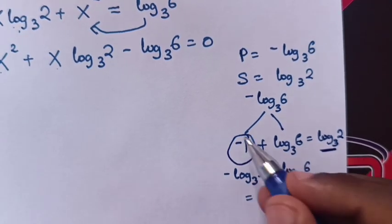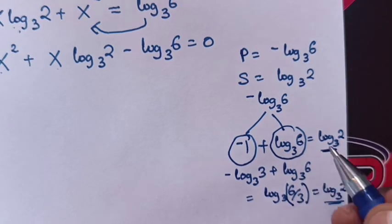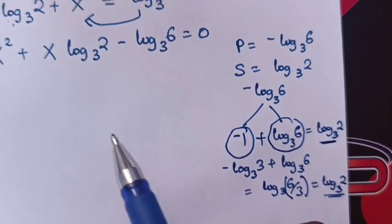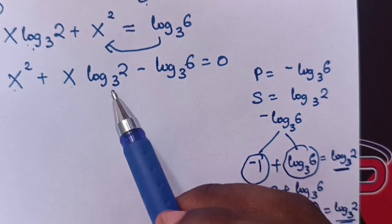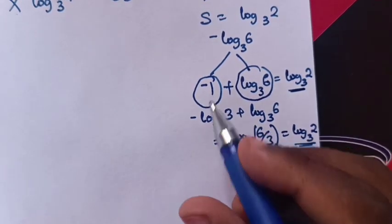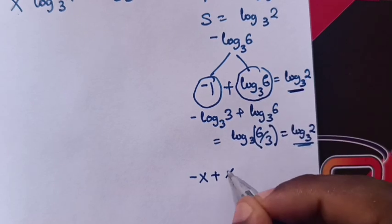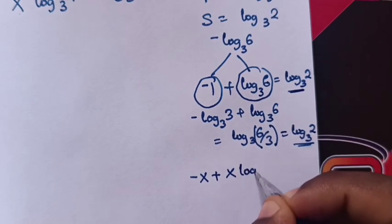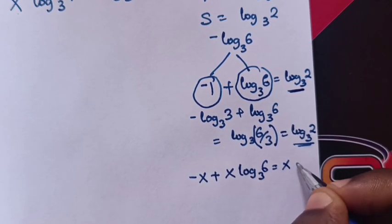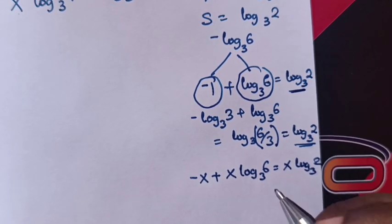When we divide here, it will be equals to log 2 base 3. So this is correct. Therefore, our factors are negative 1 and log 6 base 3. So to get x log 2 base 3, it means it is a sum of negative x plus x log 6 base 3, which is equals to x log 2 base 3.